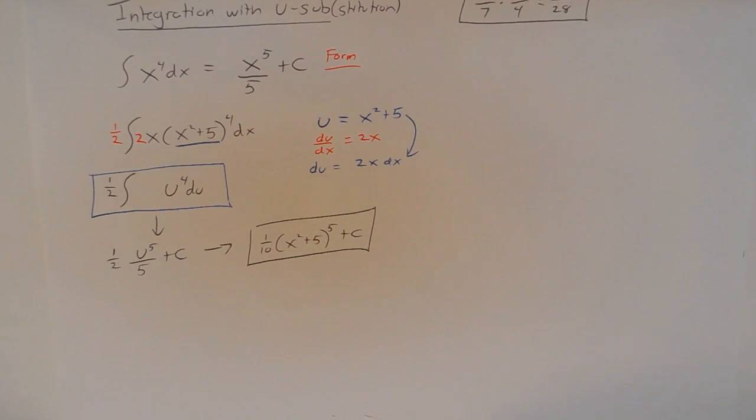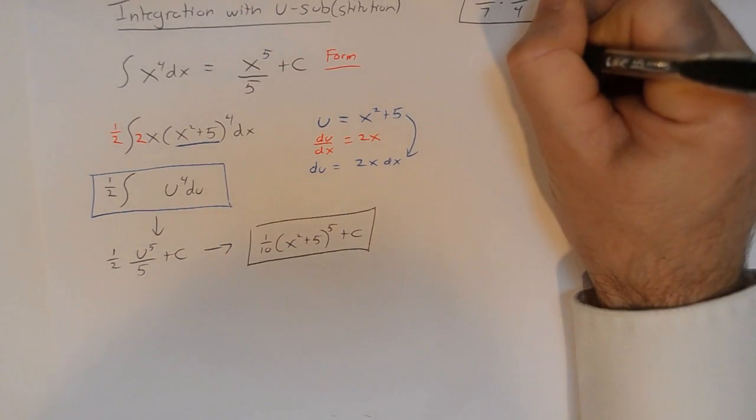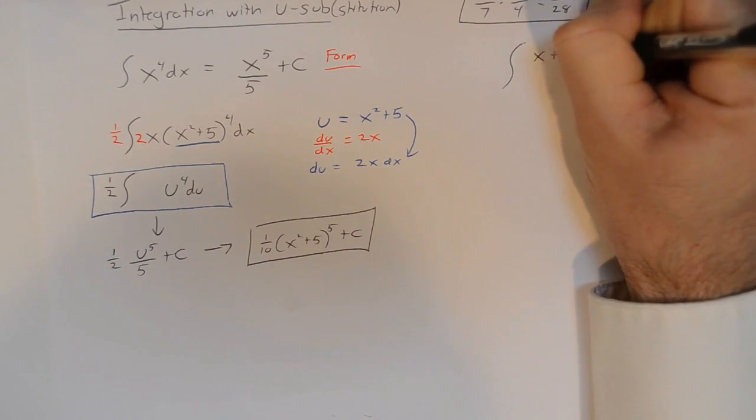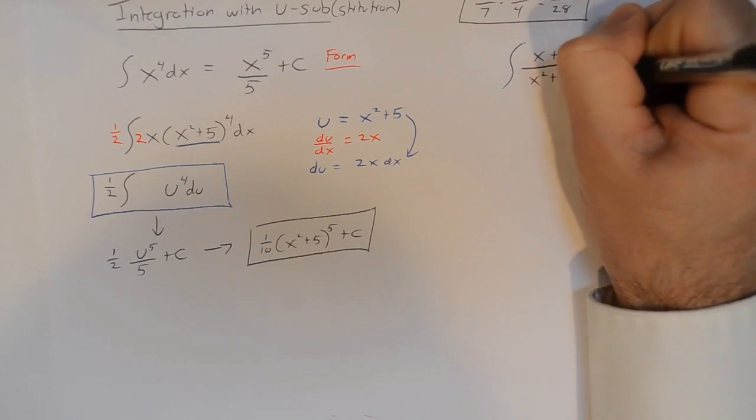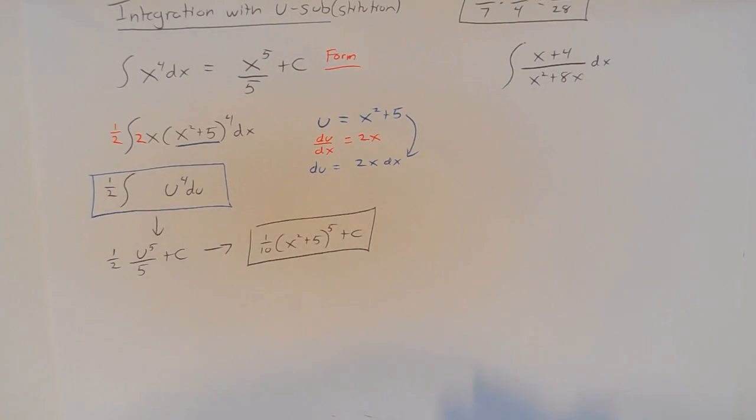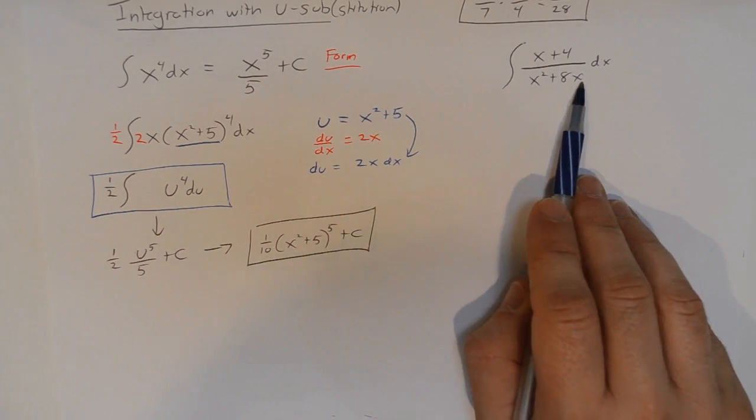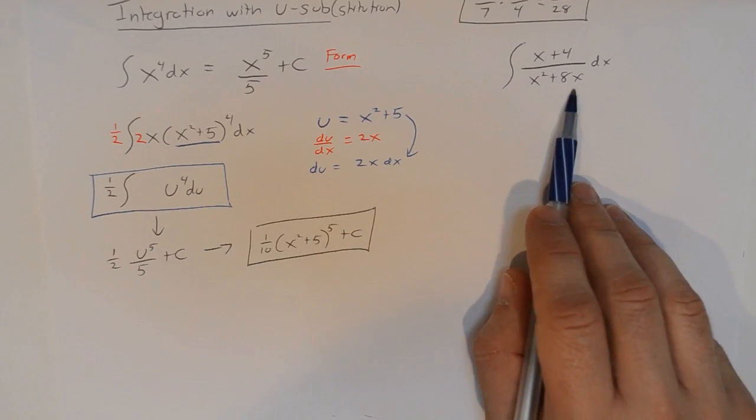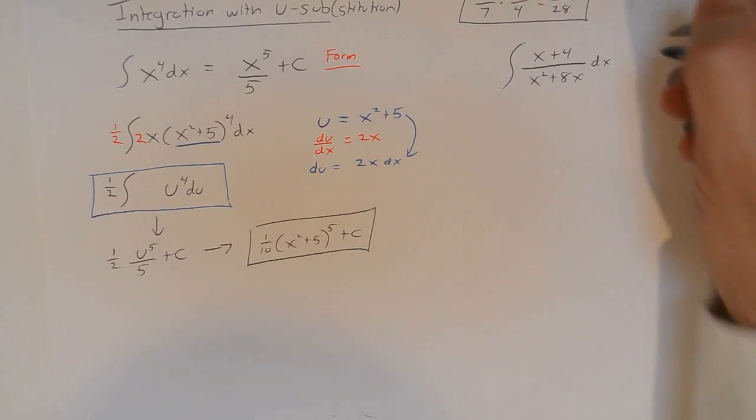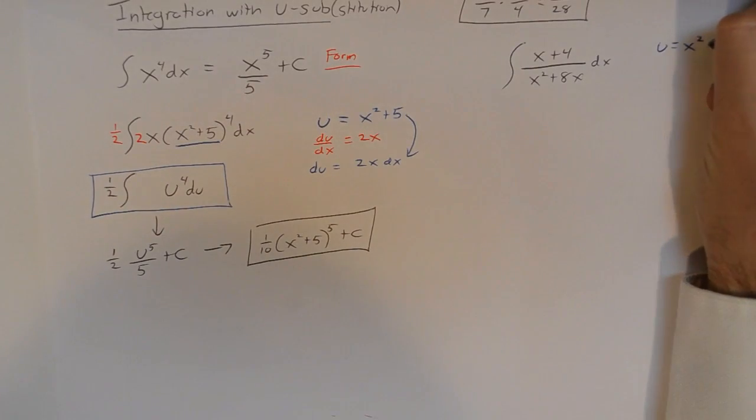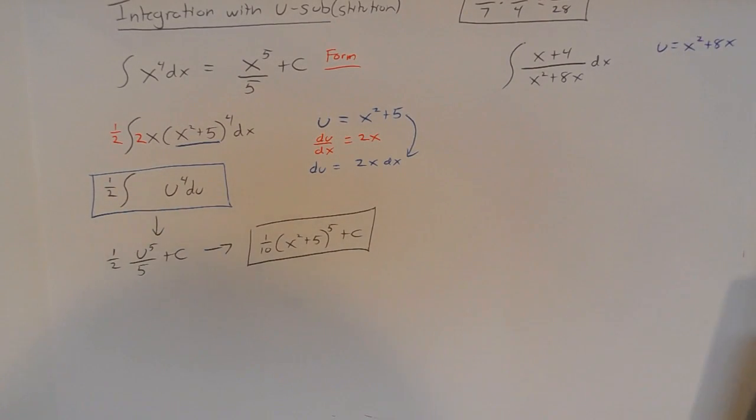Let's take a look at another example here of a way that we could use u substitution. What if I had an integral, let's say, x plus 4 over x squared plus 8x with respect to x? Well, this time, if you look at this, you might notice that if I take the derivative of x squared plus 8x, I get 2x plus 8. And that's not exactly what's in the numerator there, but it's a good start.